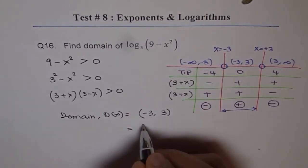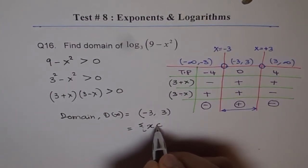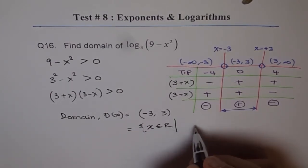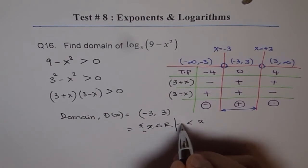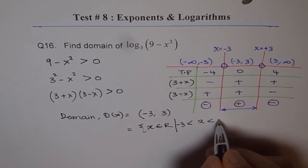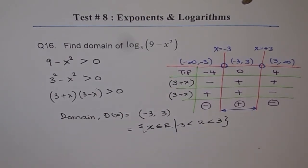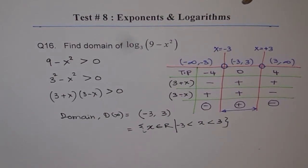Which in the set form we could write as x belongs to real numbers, so that x is greater than minus 3 and is less than plus 3. That is how we are going to find domain of our logarithmic function.